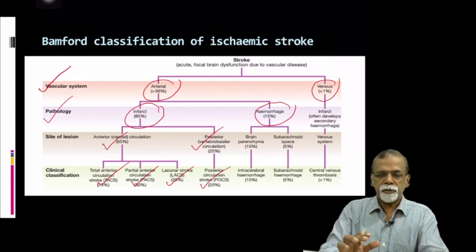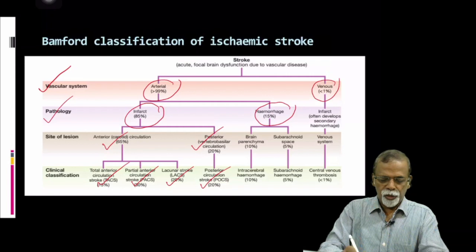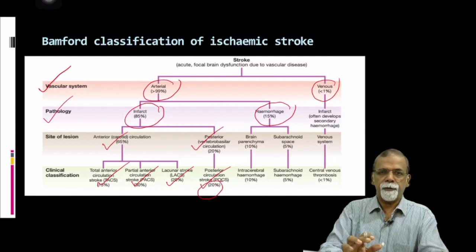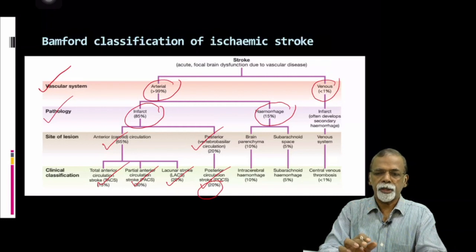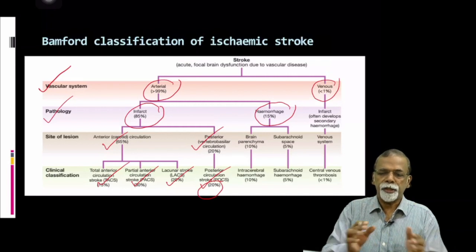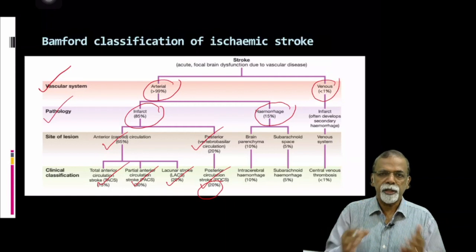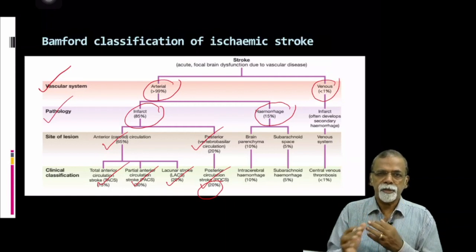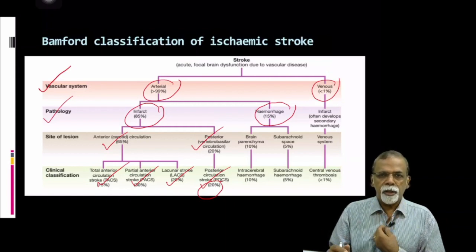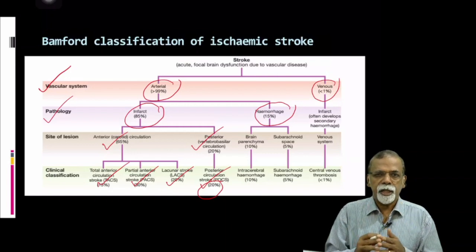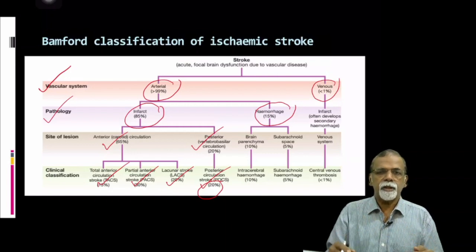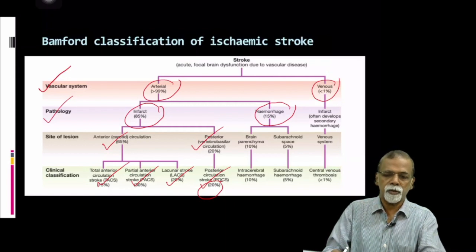Among ischemic strokes, only 20% are in the posterior circulation. The majority of strokes — 80% — are in the anterior circulation, as 80% of the blood supply goes via the internal carotid system. So blockage of the internal carotid artery or its subdivisions is more common than vertebrobasilar stroke.